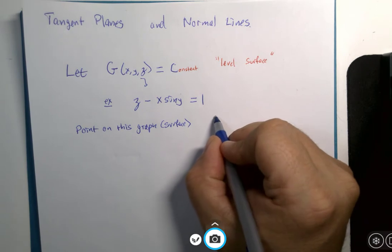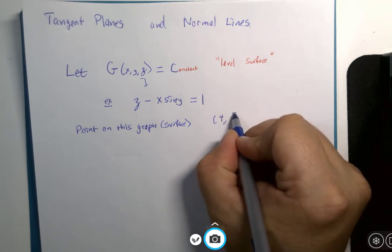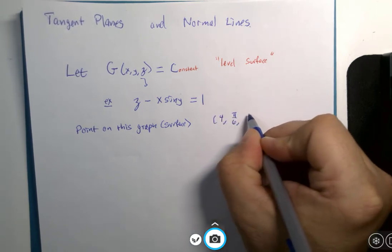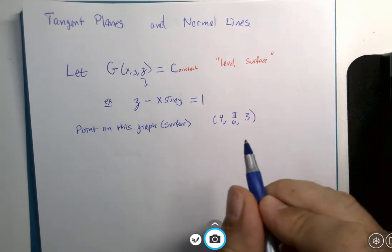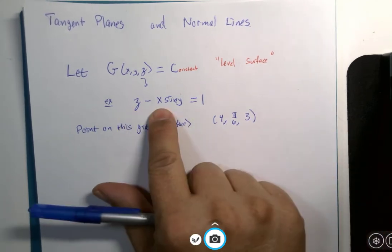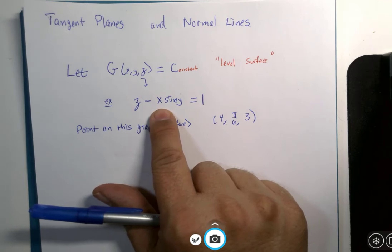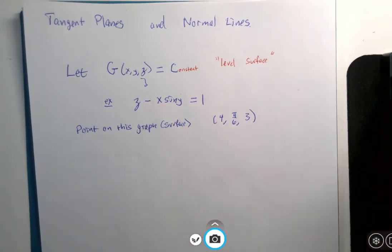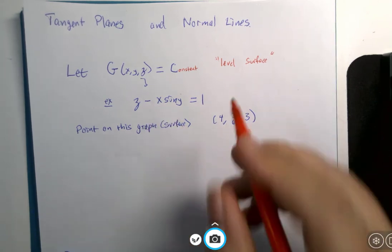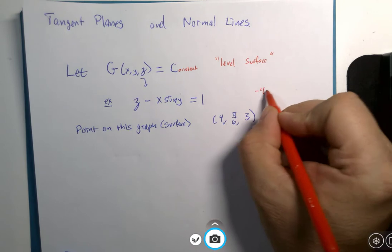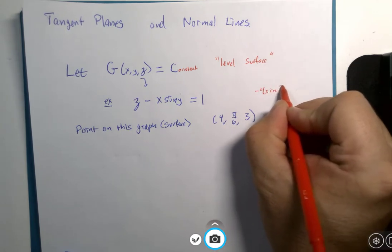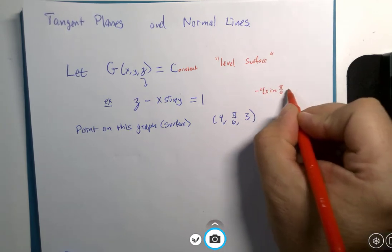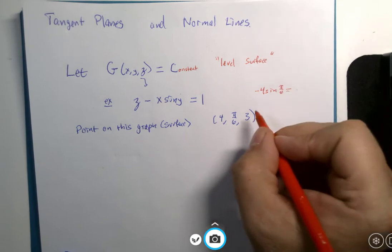I claim that the point (4, π/6, 3) is on this surface. If x is 4 and y is π/6 and z is 3,